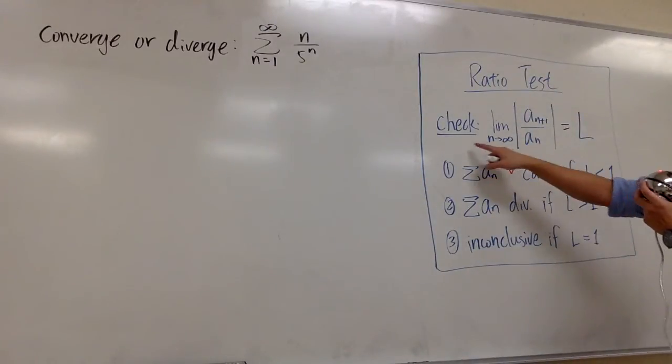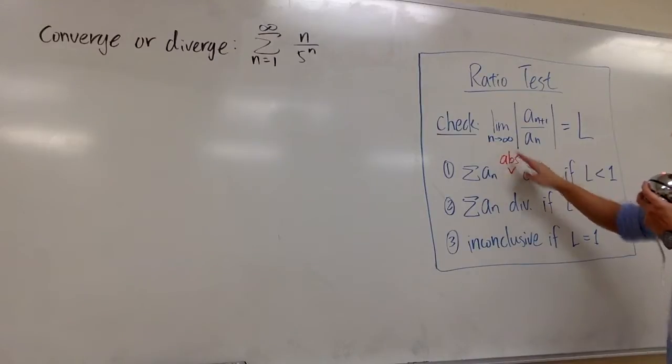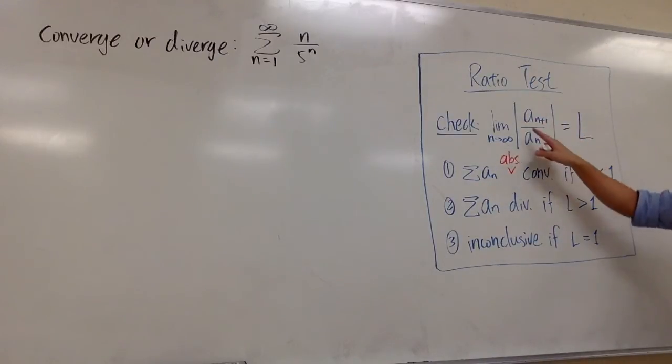For the ratio test, what we do is check the limit as n goes to infinity, absolute value of a n plus 1 over a n. This expression is just the next term divided by the current term, so that's the ratio of the next term and the current term.